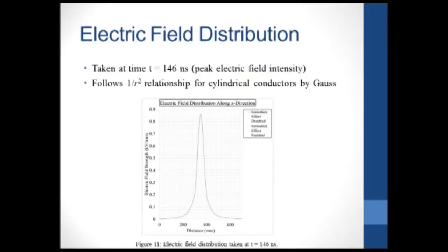The figure below illustrates the electric field distribution along the x-direction. This snapshot was taken at time t equals 149 nanoseconds, which is when the peak electric field intensity occurs. As you can see, the distribution follows the 1 over r-squared relationship for cylindrical conductors, which was proposed by Gauss.